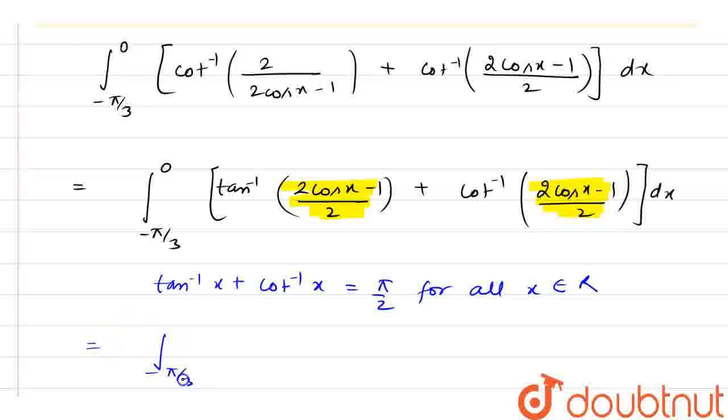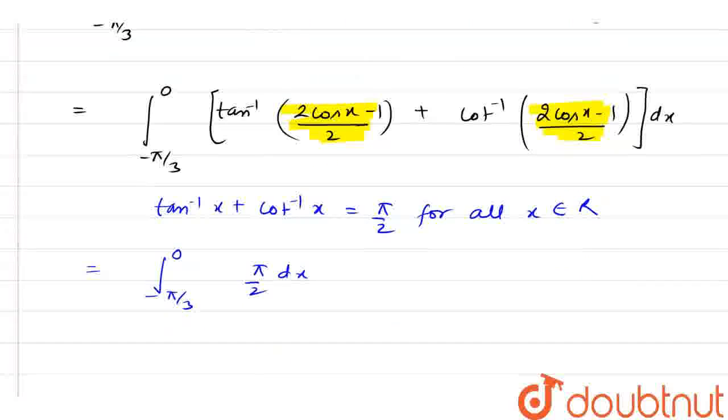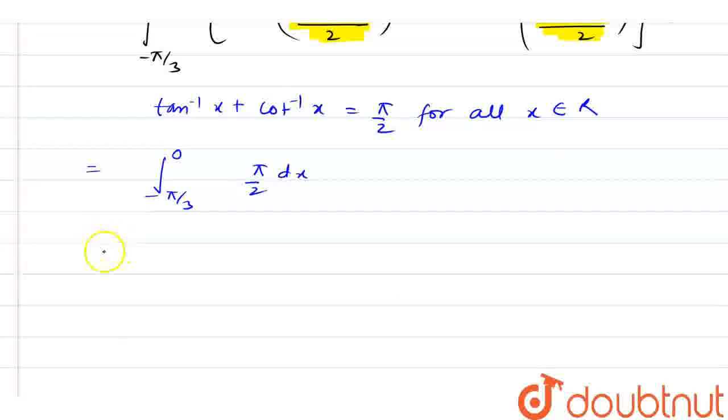So, my integral will be minus pi by 3 to 0 and this is pi by 2 dx. Now, pi by 2 is constant and integration of dx is x. So, if I put lower limit here and upper limit here then we have pi by 2 times 0 minus minus pi by 3 that is plus pi by 3.